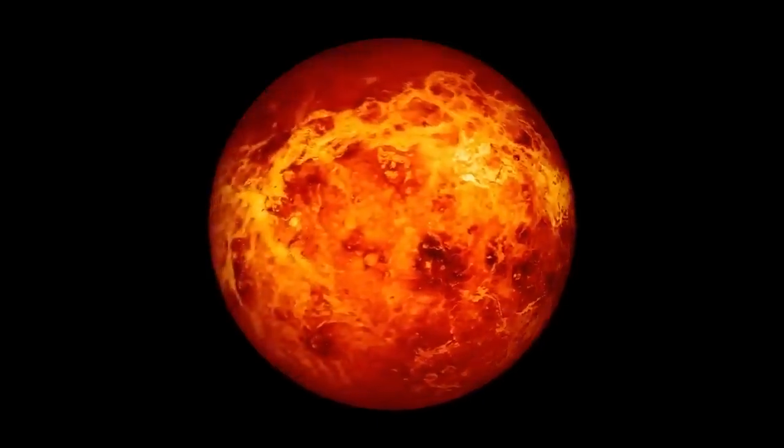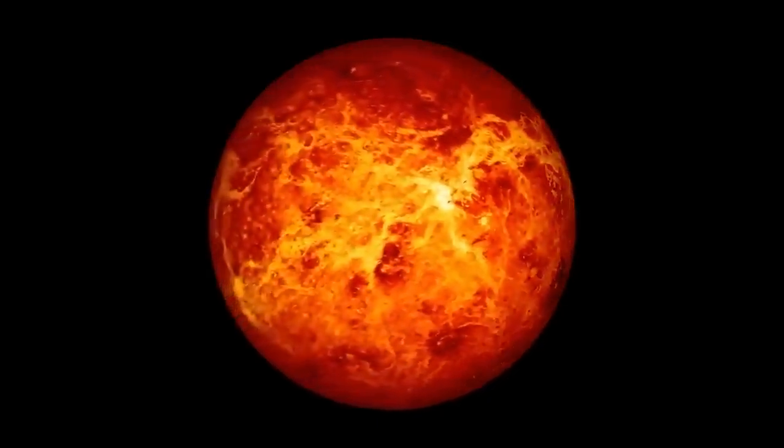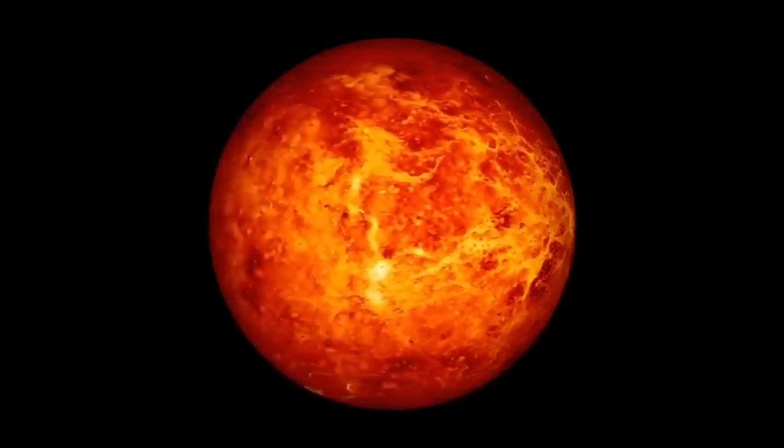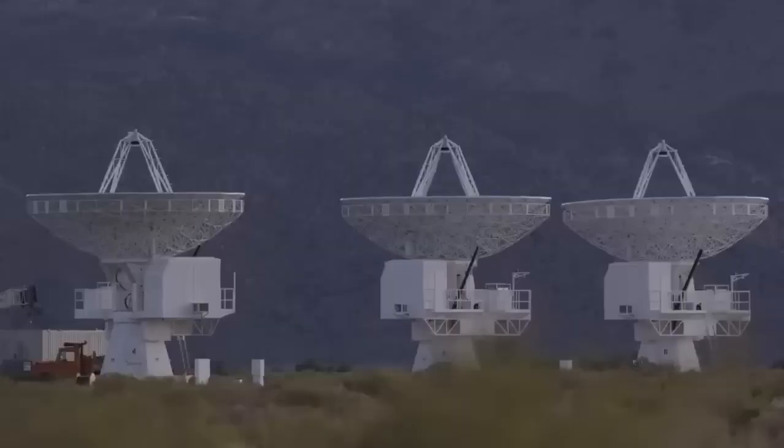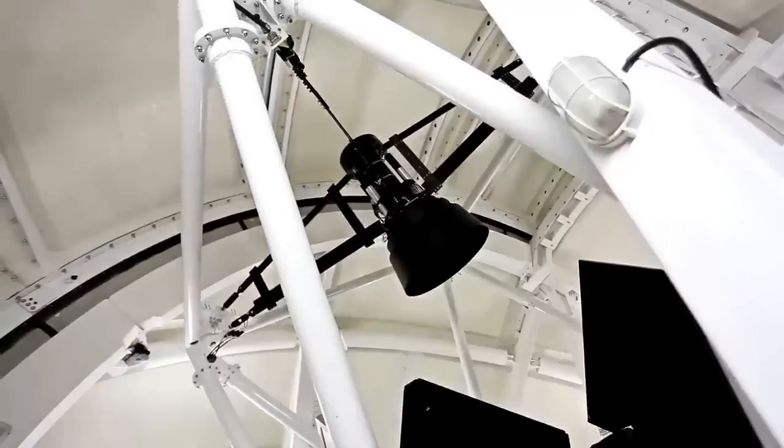Situated in the constellation Orion, Betelgeuse is a red supergiant about 640 light-years from Earth. It's so huge that if it were moved to the center of our solar system, it would engulf Mercury, Venus, Earth, and even Mars.